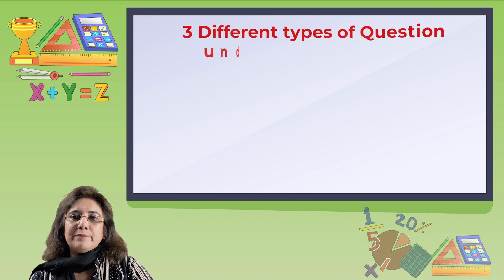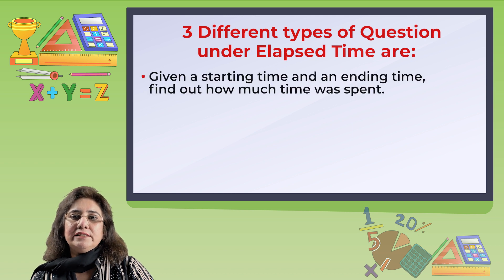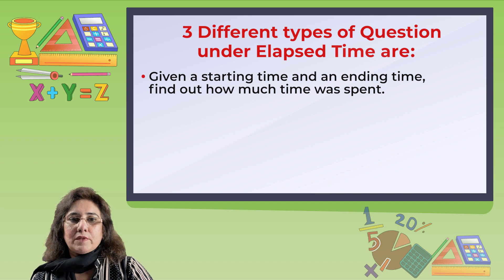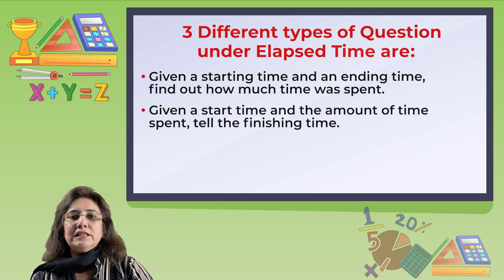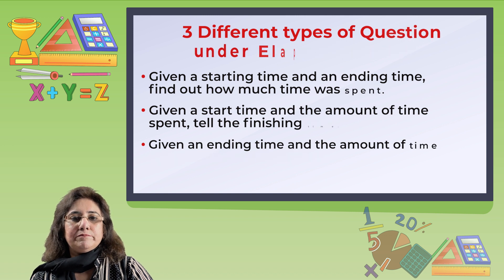Three different types of questions under elapsed time are: given a starting time and an ending time, find out how much time was spent; given a start time and the amount of time spent, tell the finishing time; given an ending time and the amount of time spent, tell the starting time.